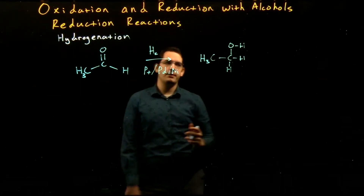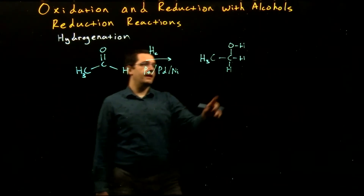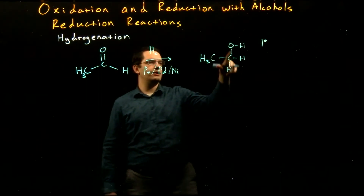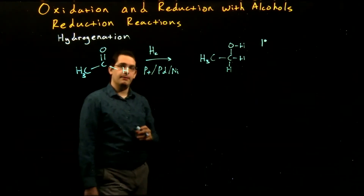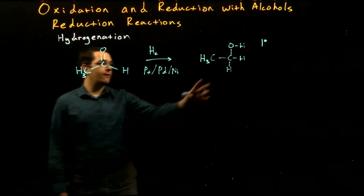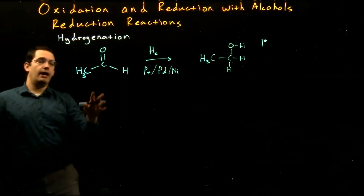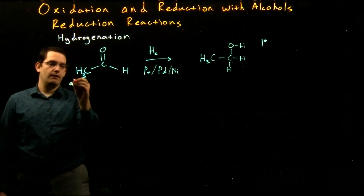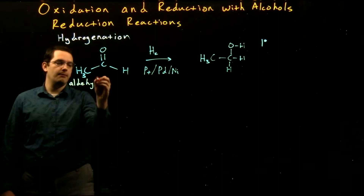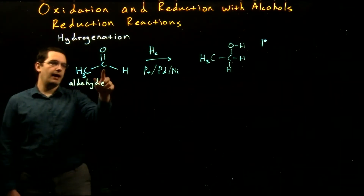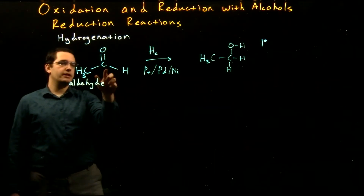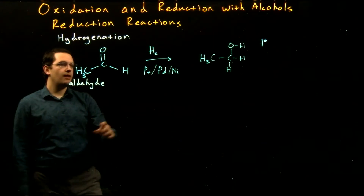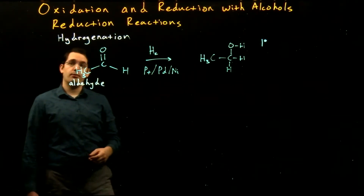When we do this we produce a primary alcohol — just one carbon bonded to the carbon bearing the alcohol. This primary alcohol is formed whenever we react an aldehyde in this hydrogenation reaction. An aldehyde is a carbonyl that has a hydrogen attached — carbon double-bonded to oxygen with a hydrogen on the carbon. When we add those hydrogens, we get our primary alcohol.